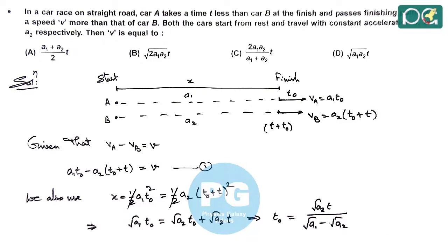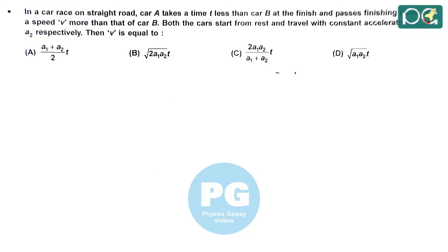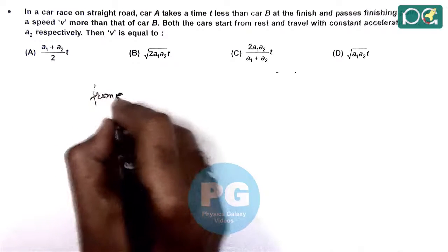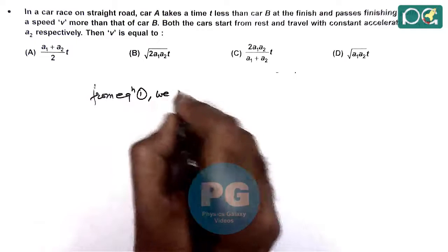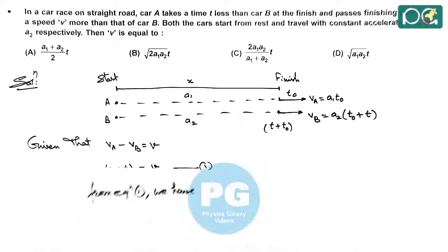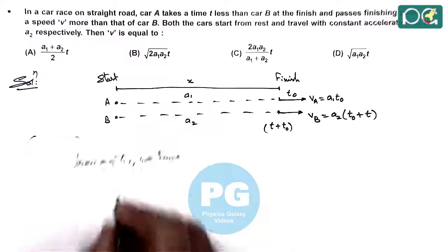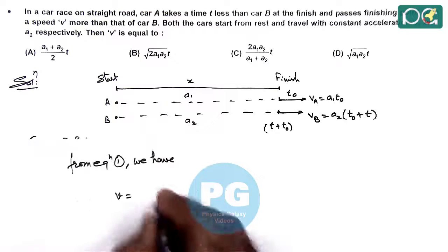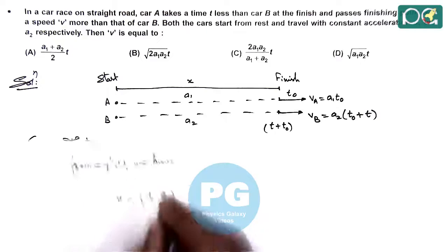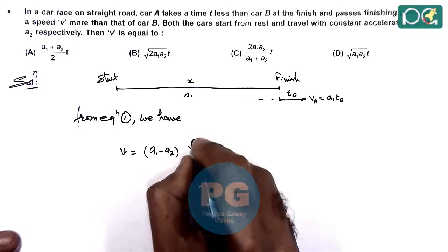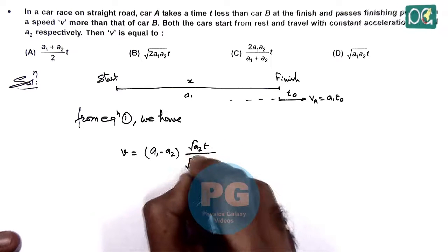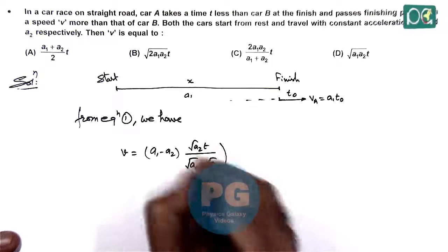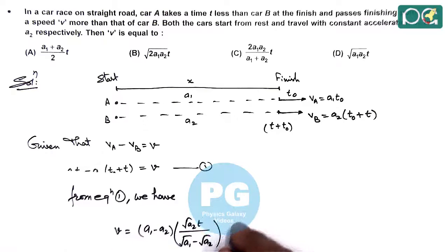And this is the value of t naught we are going to use in equation 1 to eliminate the time t naught. So in this case we can continue from equation 1. Here we have V is equal to a1 minus a2 times t naught, of which the value is root a2 T divided by root a1 minus root a2, minus a2 T.